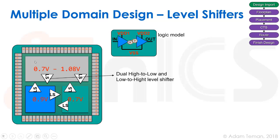We may have a power domain scheme where one domain works at 0.7 volts, another at 0.9 volts, and a third more complex domain that can operate at 0.7 volts, 1.08 volts, or move between them. Between the 0.9 volt domain and the 0.7 volt domain, we need a level shifter to pass data in each direction.